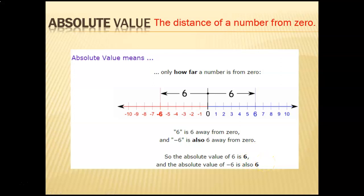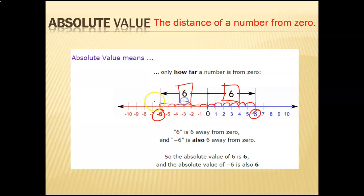If I take positive 6, it is 6 spaces away from zero, so the absolute value of 6 is 6. But look what happens on the negative side: if I'm looking at negative 6, it's still 6 spaces away. The absolute value of negative 6 is also 6.